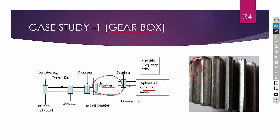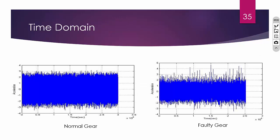I am going to monitor the vibratory signals of this gearbox. A setup for applying the load is given, and it is supported in bearings. We have to measure vibration in three directions: horizontal, vertical, and axial. In case of uniaxial accelerometers, we need three accelerometers, but with a triaxial sensor, one sensor is enough to measure vibration in all three directions. I am going to fix the accelerometer on the gearbox bearing.